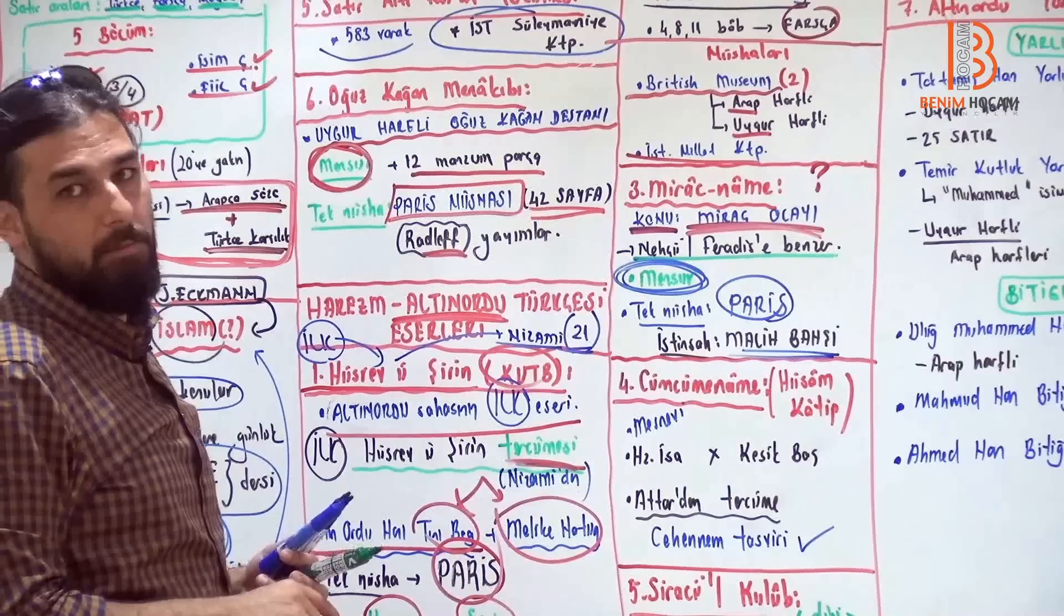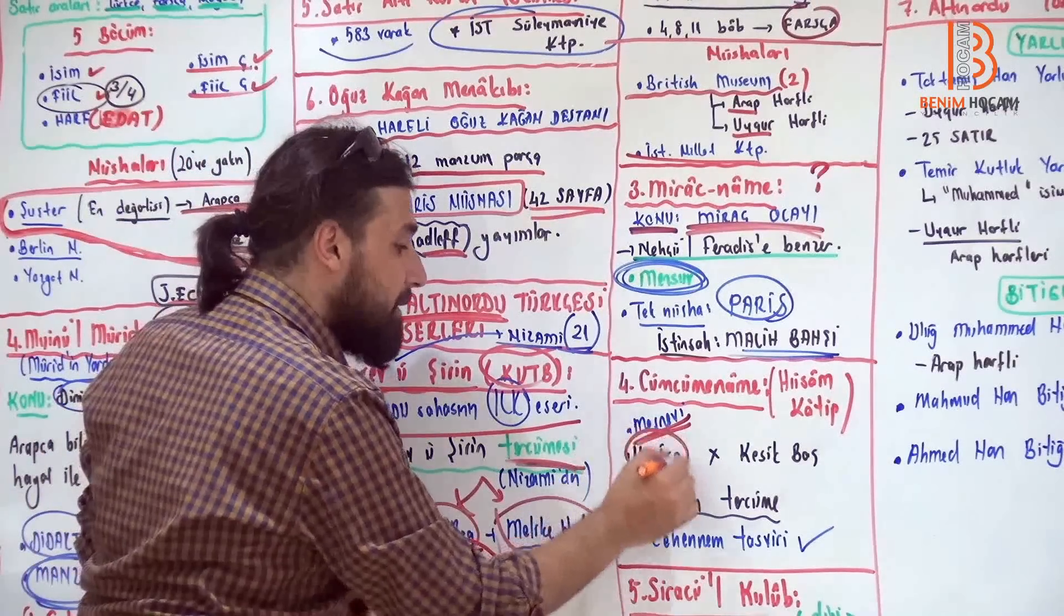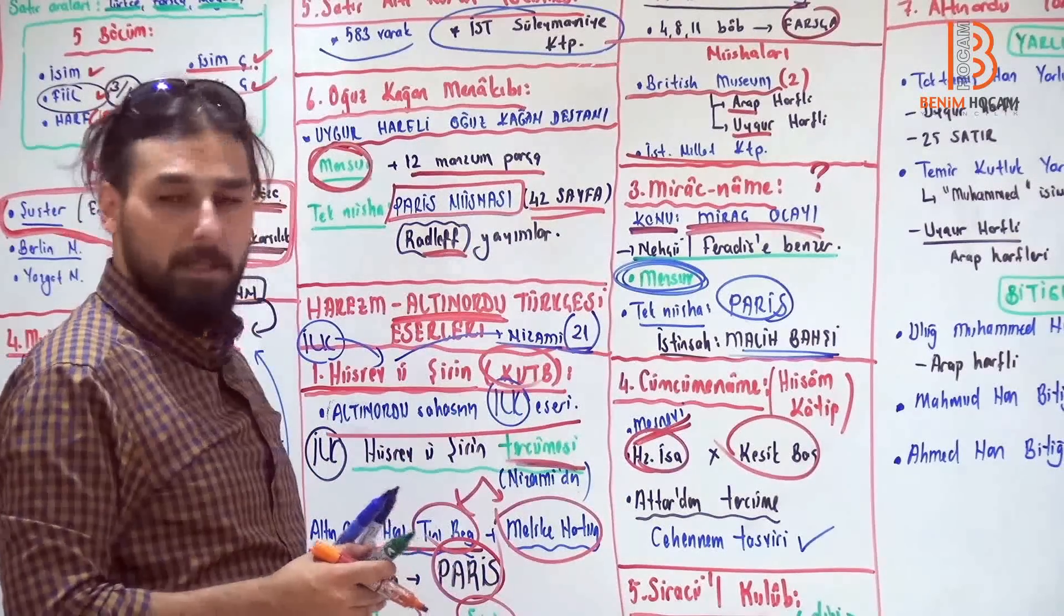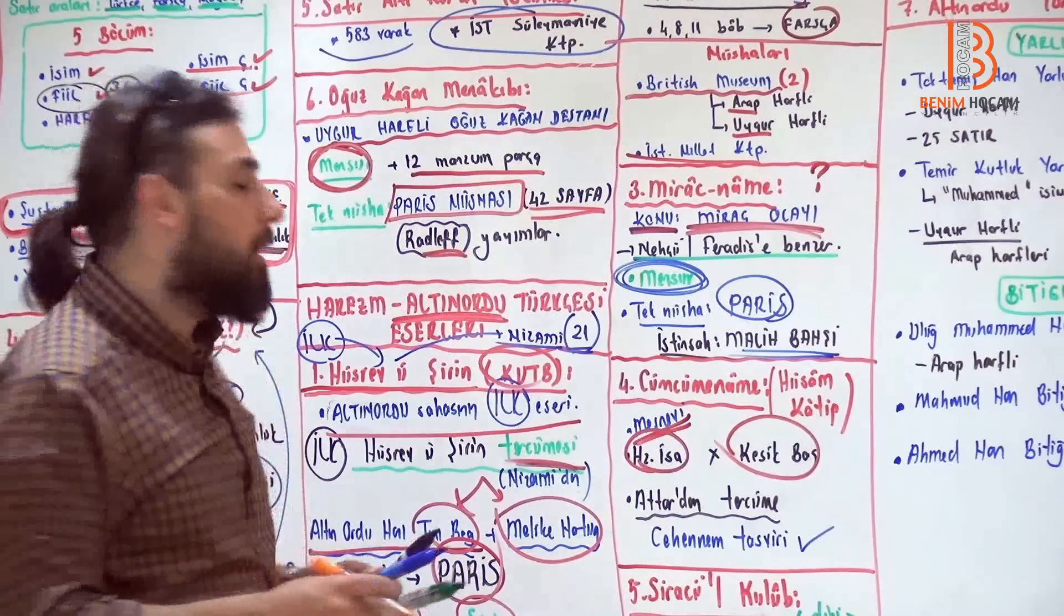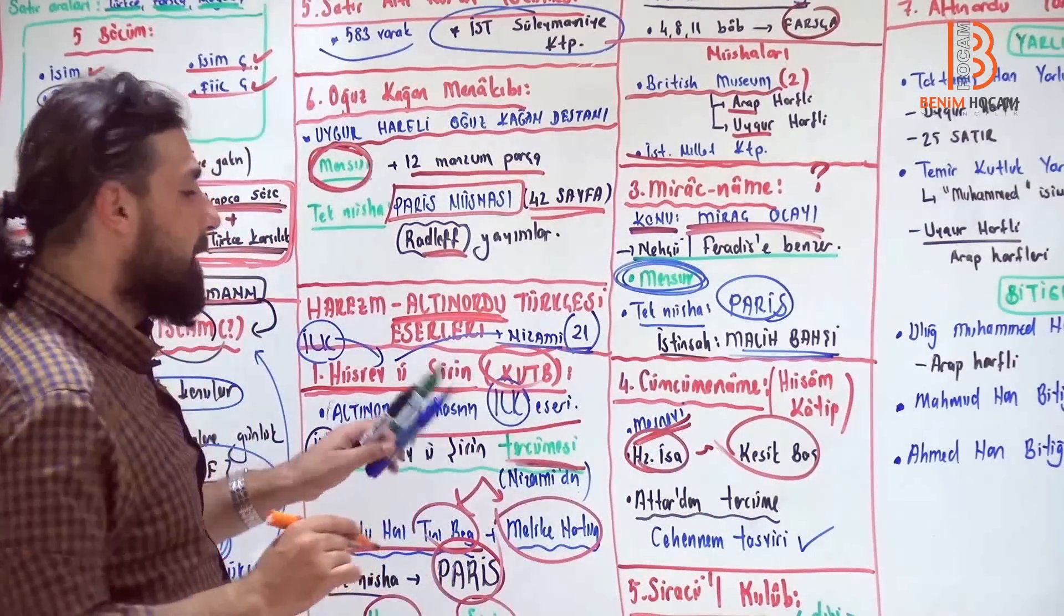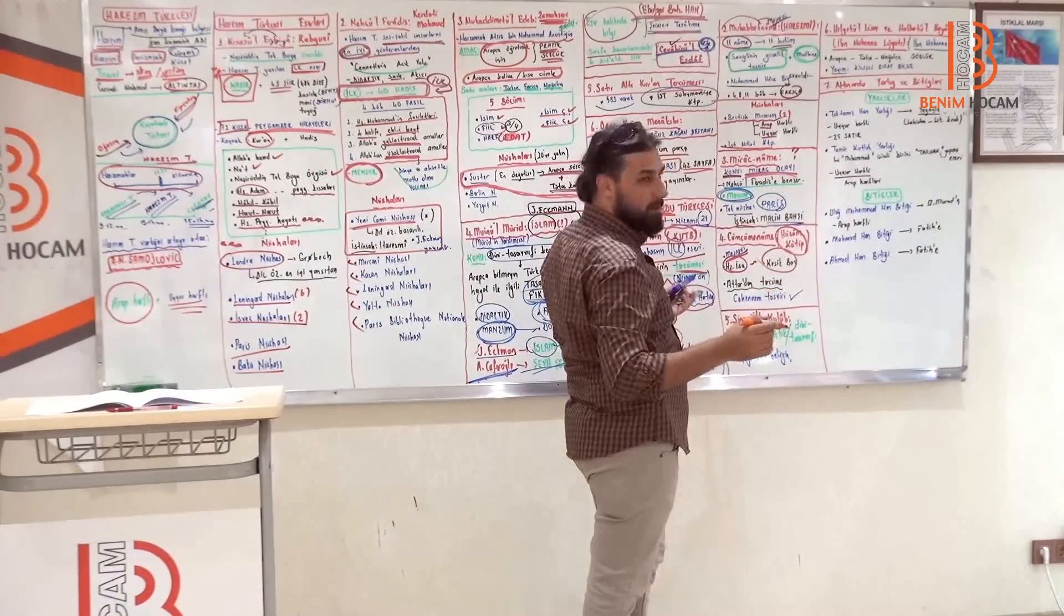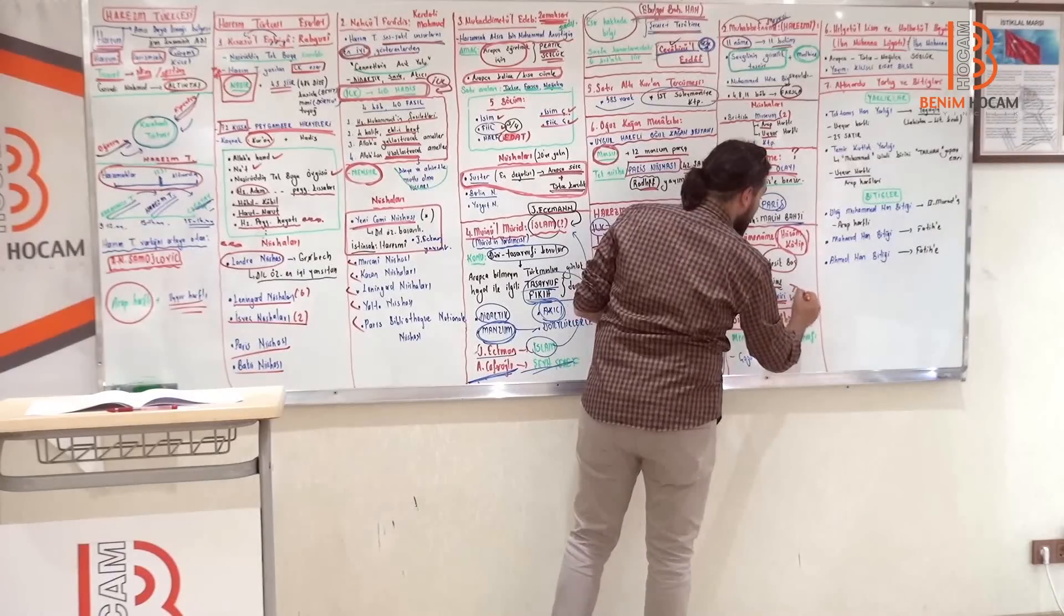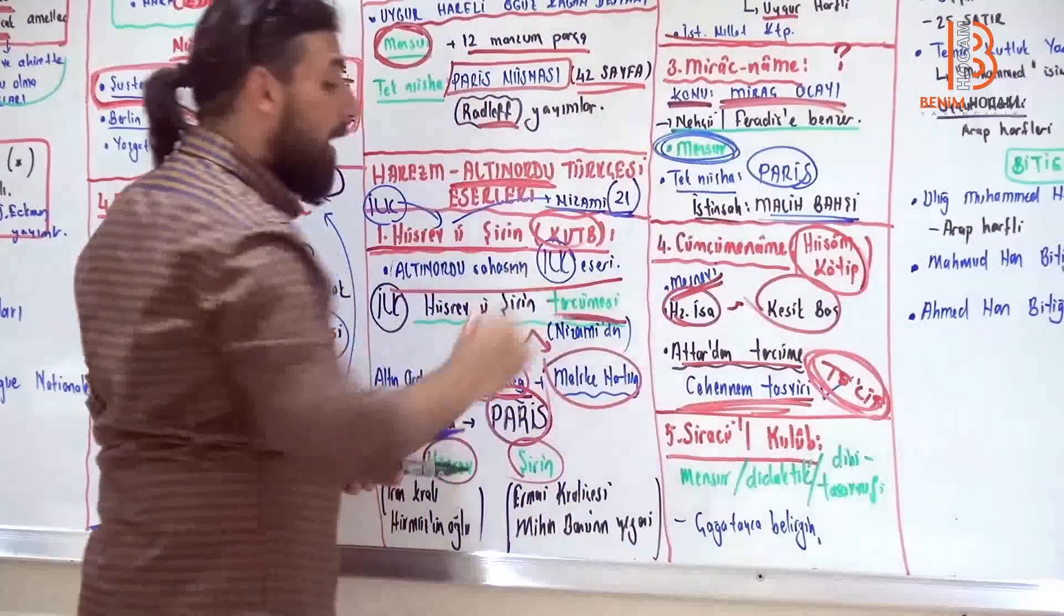Cümcüme Name ya da Dağistan'ın Cümcuma'sı. Bu da bir mesnevidir. Hz. İsa ile Kesikbaş arasındakiler anlatır. İlyas Peygamber'e itaat etmeyen Kesikbaş'ın cezalandırılması ve yanındakiler iyi davrandıktan sonra Hz. İsa tarafından diriltilmesi anlatılır. Yani Kesikbaş. Dağistan Cümcuma ya da Cümcüme Name, Hüsem Katib'in yazdığı Kesikbaş olayıdır. Attar'dan tercümedir ama cehennem tasviri hiç Attar'ınkine benzemez gayet de güzeldir. Ona telif mahiyeti kazandırmıştır.